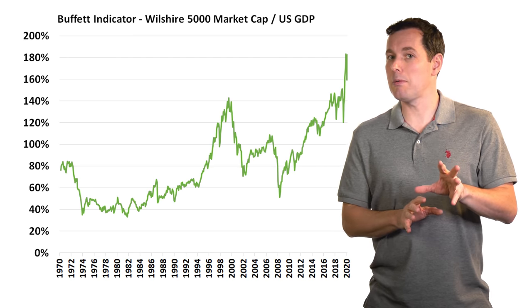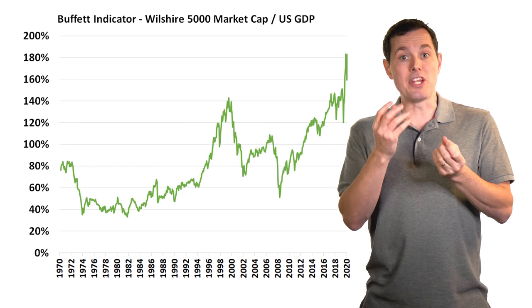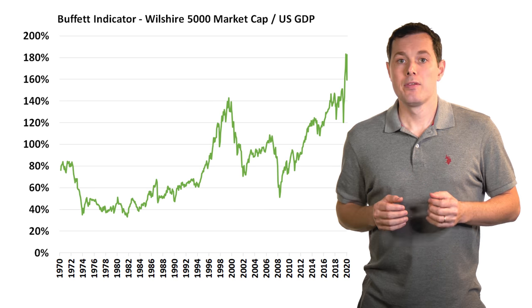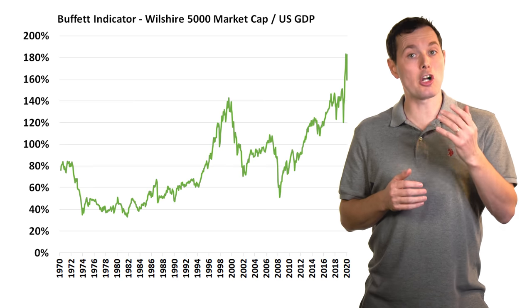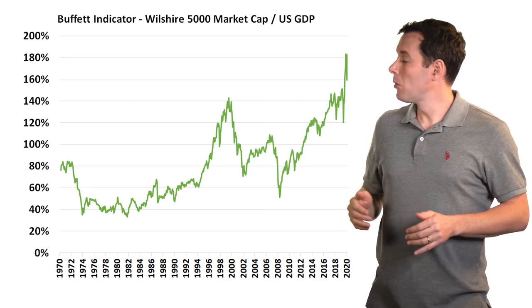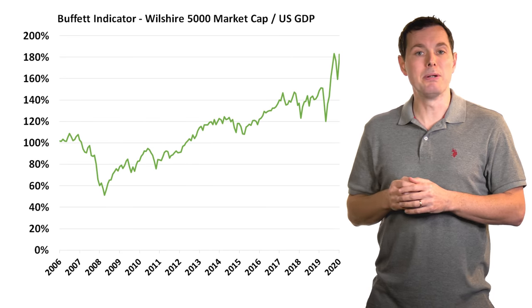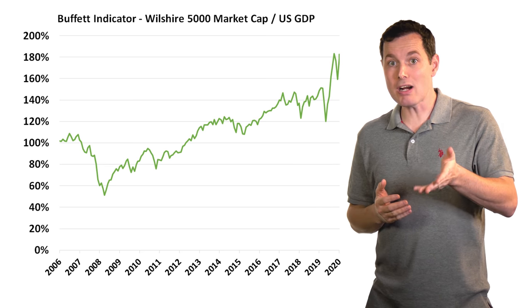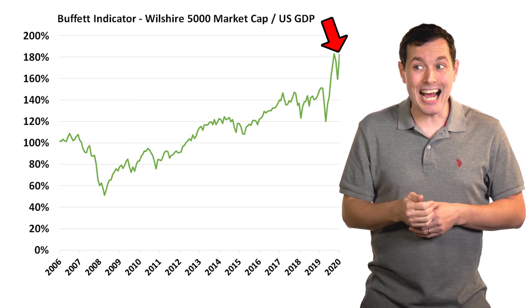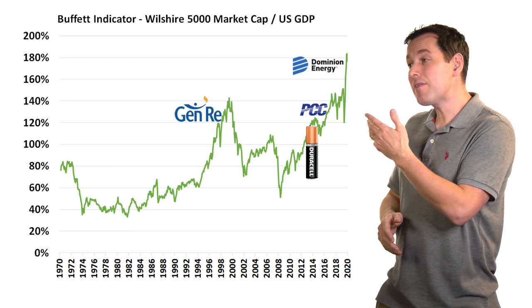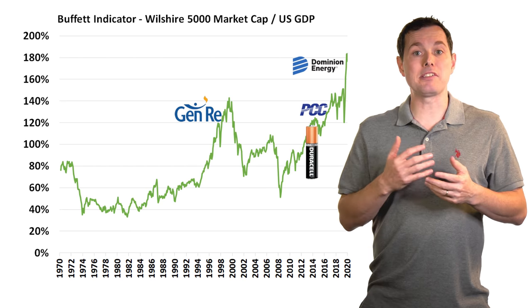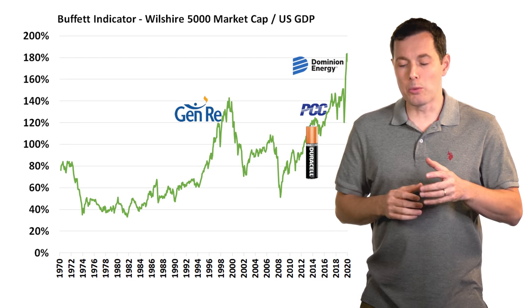First up, we have the Buffett indicator. Basically what it does is compare the size of the stock market by market cap to the United States GDP, or gross domestic product. The theory is that as GDP rises, it's logical that the stock market would also rise. So if GDP and the stock market go up the same amount, this ratio would stay about flat. But if we zoom in, we can see that right now the stock market is up near its high relative to GDP. This doesn't necessarily mean that investing right now is crazy — Buffett himself invested consistently throughout history. Even recently, he bought a company called Dominion Energy.